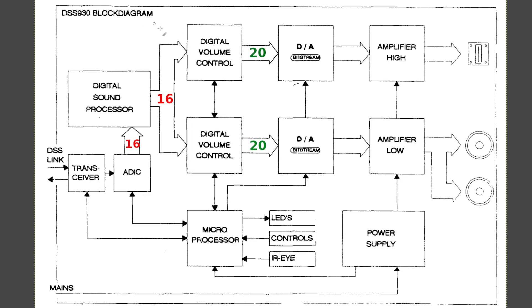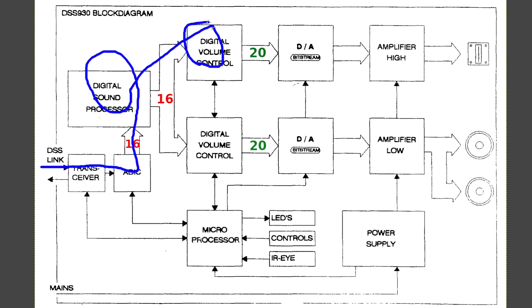Here is a simplified block diagram of the DSS 930, and I want to use it to illustrate some of the changes I want to be making to improve the acoustic quality of this loudspeaker. The signal path for audio comes in to the audio digital IC, goes through the DSP, through the digital volume control, through the D2A converter, into the amplifier to the speakers.